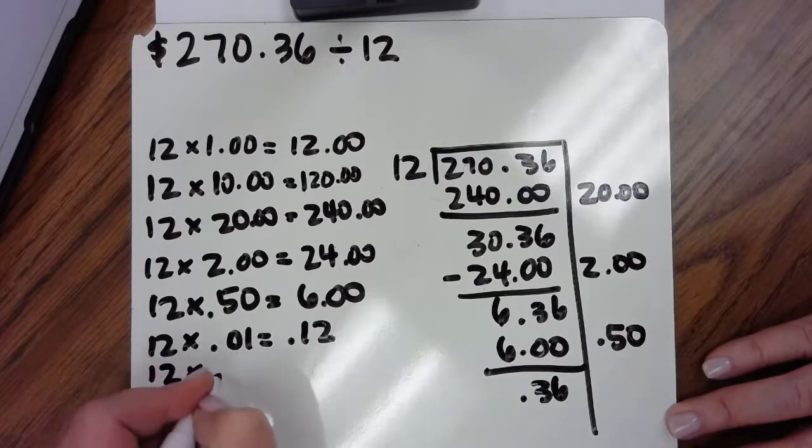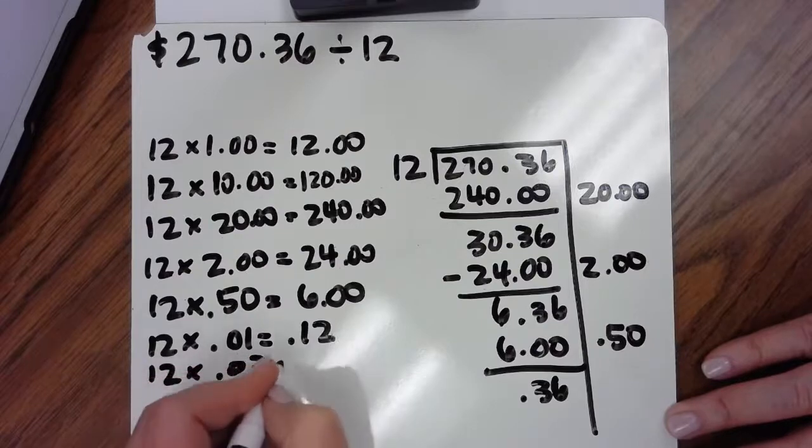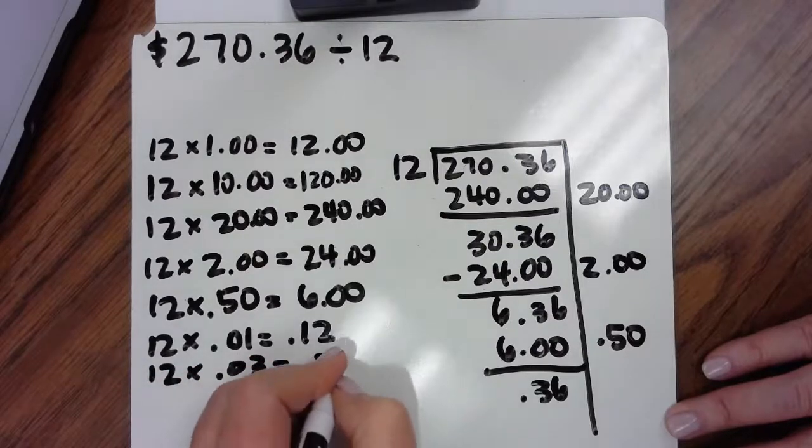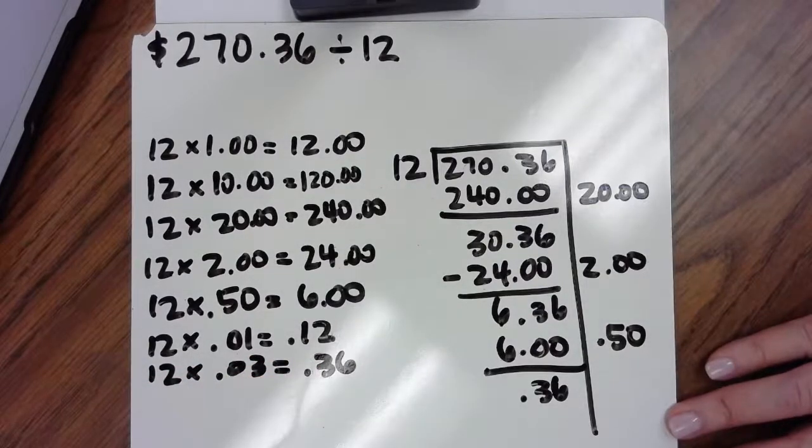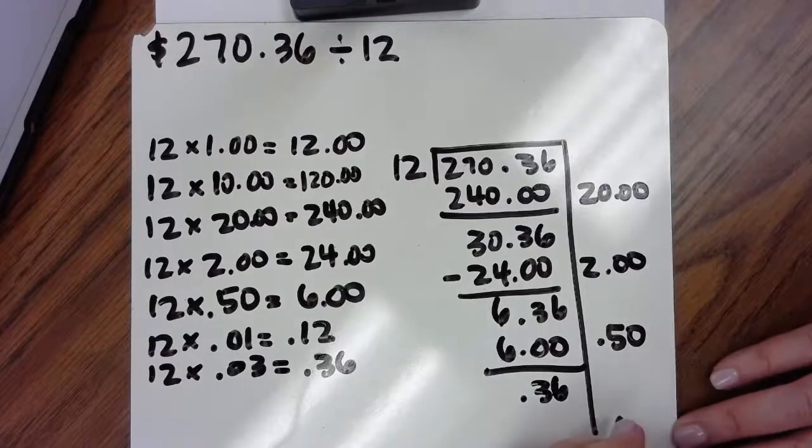...or they may notice that if I say 12 groups of $0.03, that gives me the $0.36 that I need. And so that's what I'm going to choose to do.